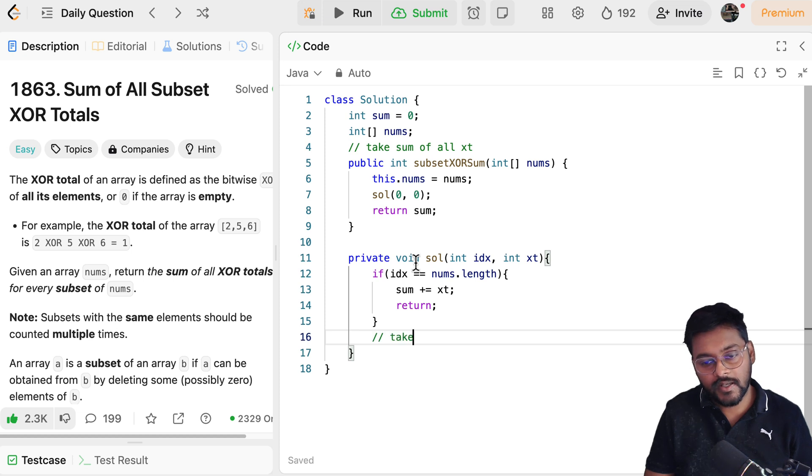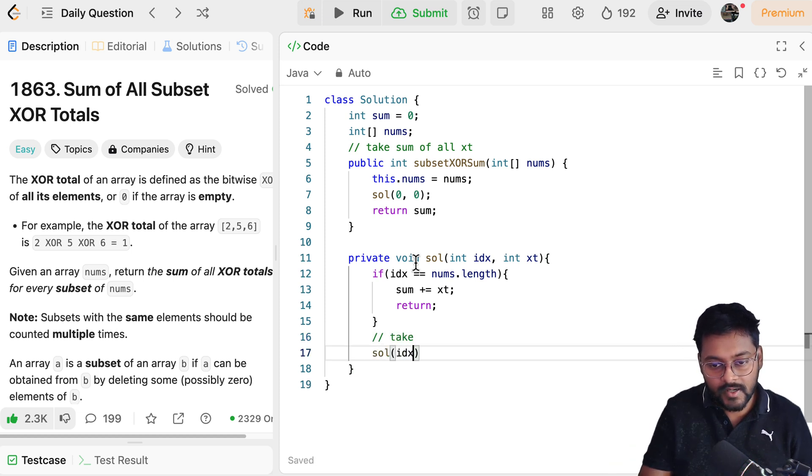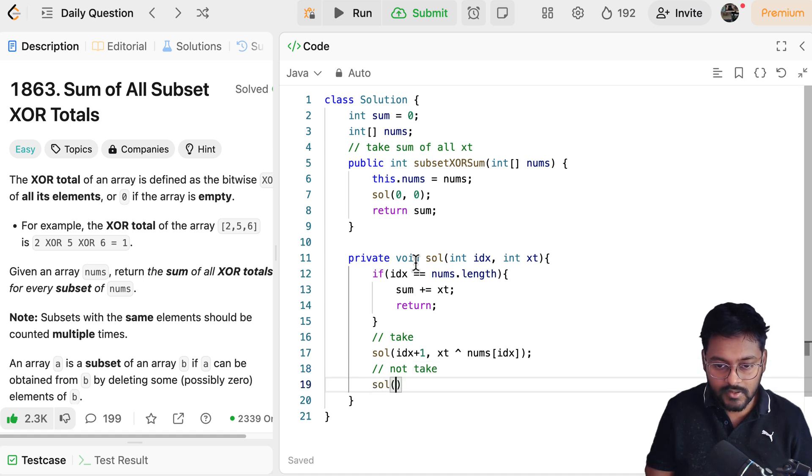Now first option is take it. How do I take it? Solution idx plus 1. If I have to take it, current XOR total so far, take another XOR with current element. If I tell you not to take it, then current, just move to the next index. And whatever is the XT, just pass it to the next element.